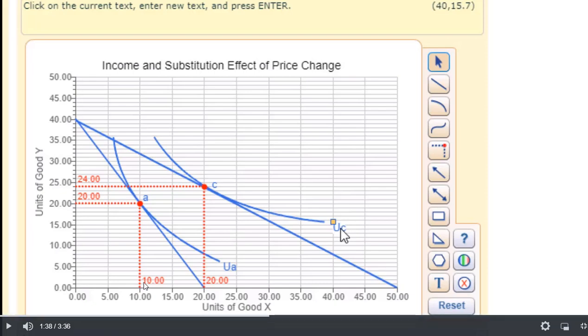Hello. In this video I am going to do a graphical look at the income and substitution effect of a price change. We start here where the consumer is maximizing utility at point A. We've got this budget line that runs from the y-axis here of 40 units to an x-axis here of 20 units. And then the indifference curve is just tangent right here, point A, where the consumer is buying 20 units of good y and 10 units of good x.